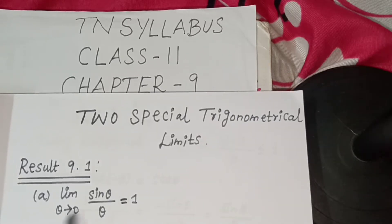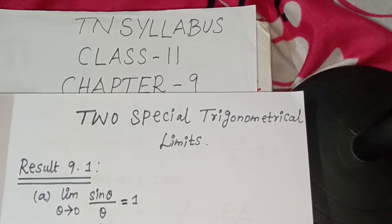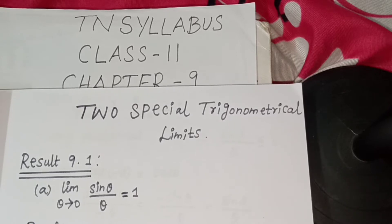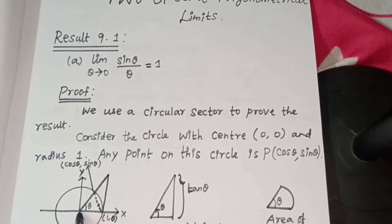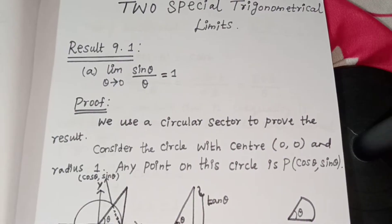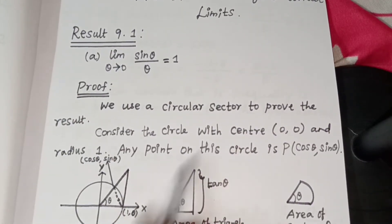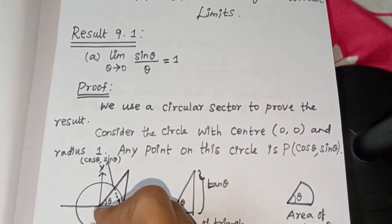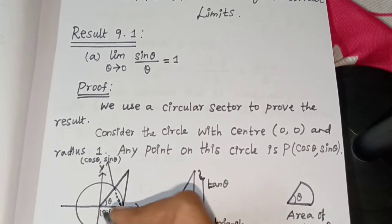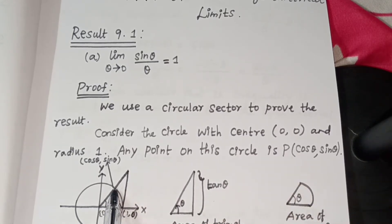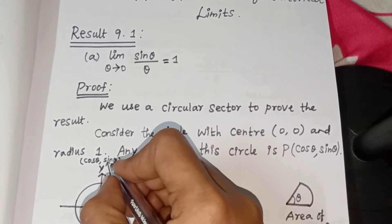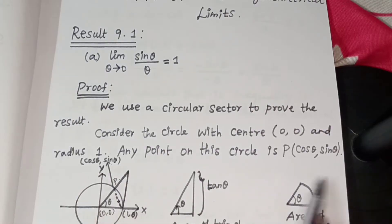First, subdivision A: limit theta tends to 0, sin theta divided by theta equals 1. This is our proof. We use a circular sector to prove the result. Consider the circle with center O, draw the circle with center (0, 0) and radius 1. Any point on this circle is P, with coordinates (cos theta, sin theta).